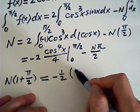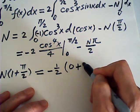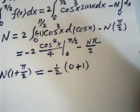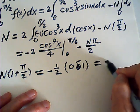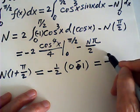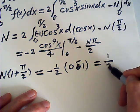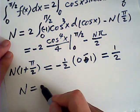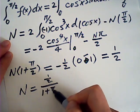This is negative half. This will be 0 when x is half pi. When x is 0, this is negative half. So this one is equal to positive half. Therefore, N is equal to negative half.